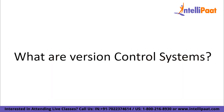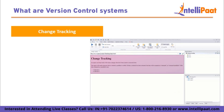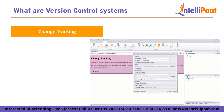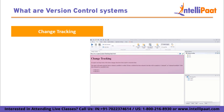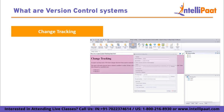What are version control systems? A version control system is a software tool that helps you manage changes made to files over time. It keeps track of all modifications, allows multiple people to work on the same project simultaneously, and provides a history of all changes made. Change tracking: version control systems record changes made to files, including additions, deletions, and modifications. They keep a detailed log of every modification, allowing you to see the complete history of the project.